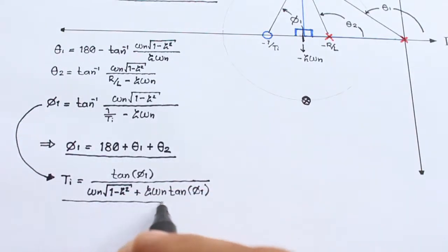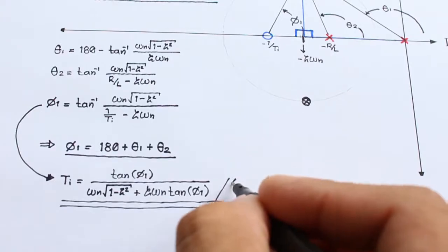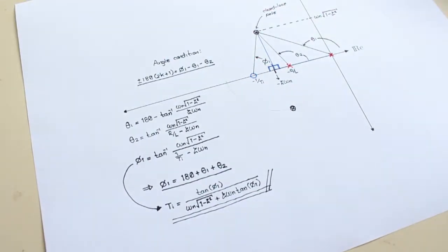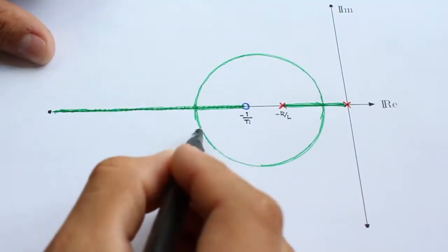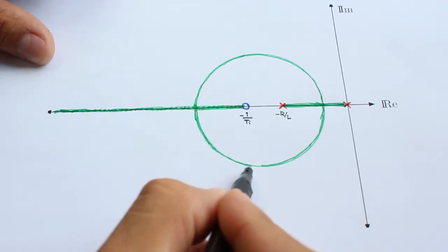With the phi1 angle, it is possible to clear the Ti variable from the equation above. In summary, we have placed the zero in such a way to make the root locus pass through the desired closed-loop poles.